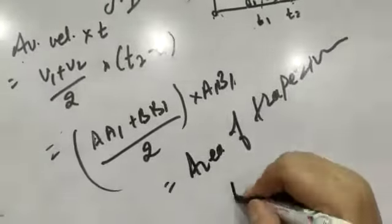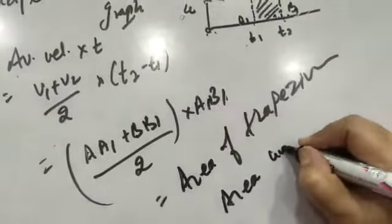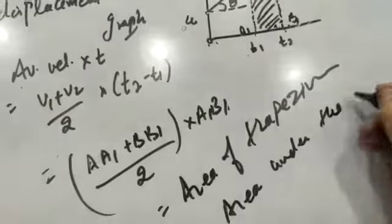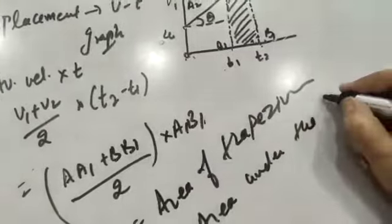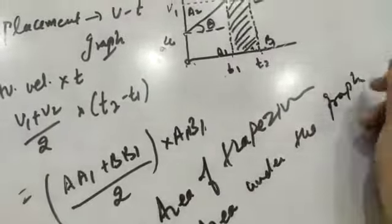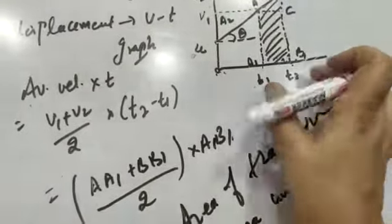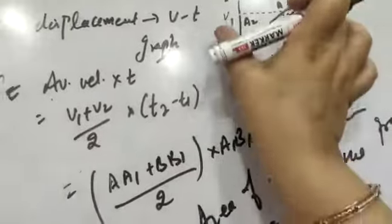Or we can say area under the graph, for which we have taken the time measurements. We are measuring for t2 minus t1. If we are measuring from 0 to t2, then this whole area will be considered as the displacement.